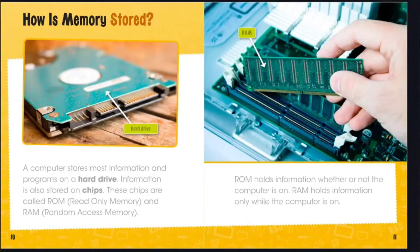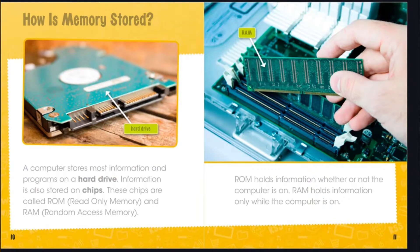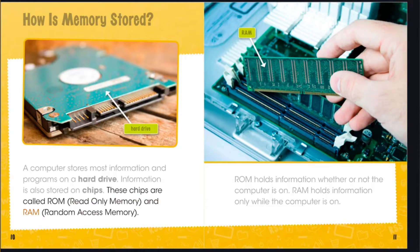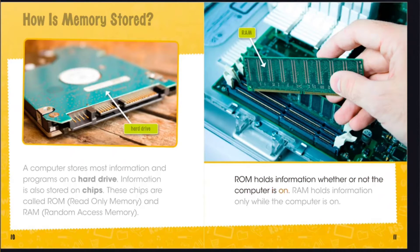How is memory stored? A computer stores most information and programs on a hard drive. Information is also stored on chips. These chips are called ROM, read-only memory, and RAM, random access memory. ROM holds information whether or not the computer is on. RAM holds information only while the computer is on.